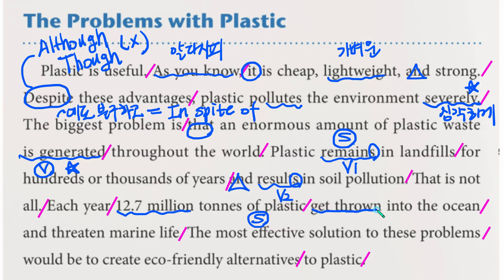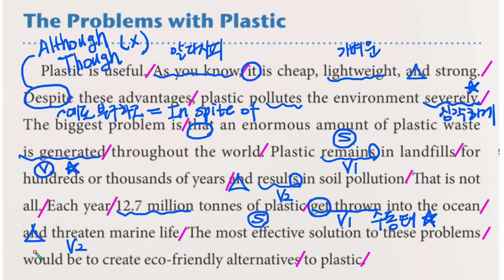'Get thrown'이 동사이며 이것은 수동태입니다. 'get'은 'be동사' 대신에 사용할 수 있으며 'become'을 써도 수동의 표현입니다. 플라스틱이 바다 속에 던져지는 것이니 당연히 수동태이고, 그 던져진 플라스틱이 바다 생물을 위협하는 것은 능동태입니다. 형태를 조심하셔야 합니다. 어휘로 'alternative'는 대안이라고 해석하면 됩니다.